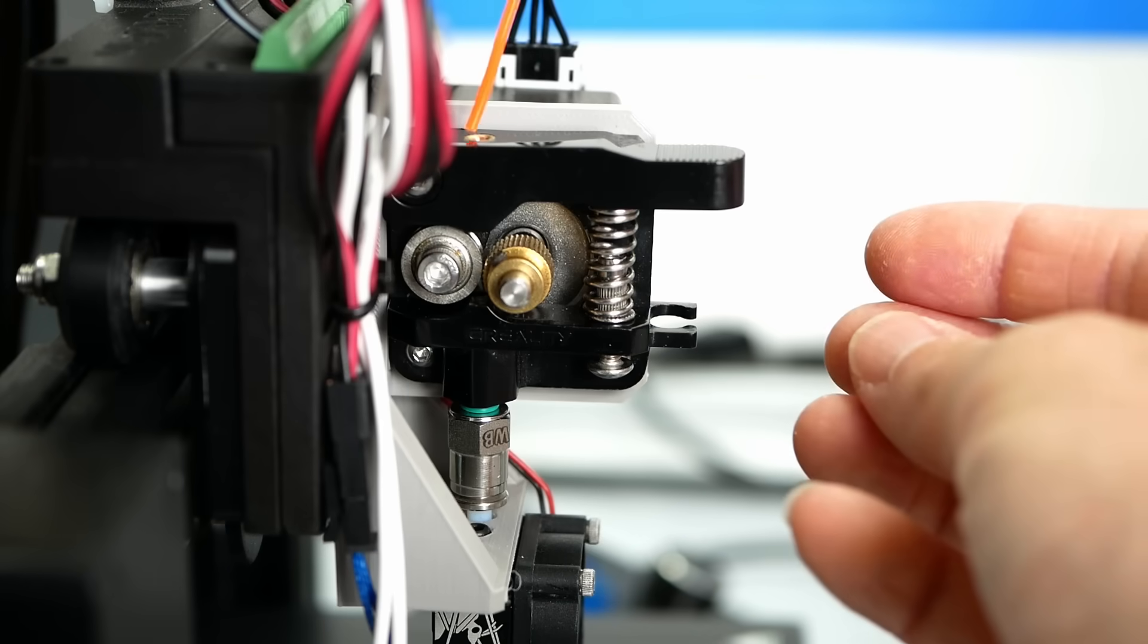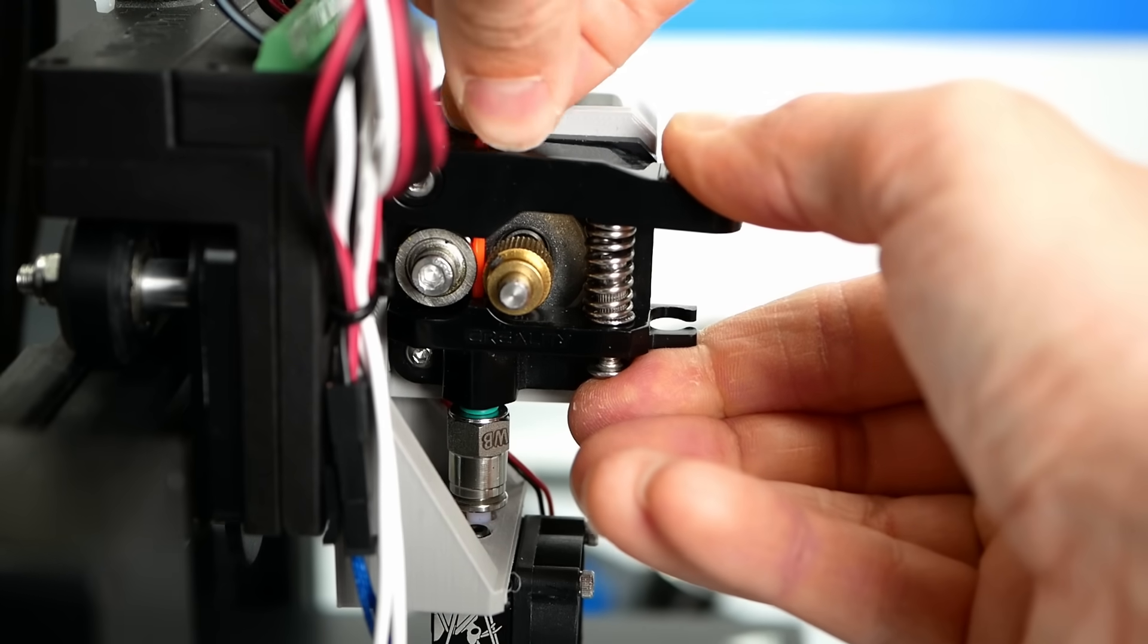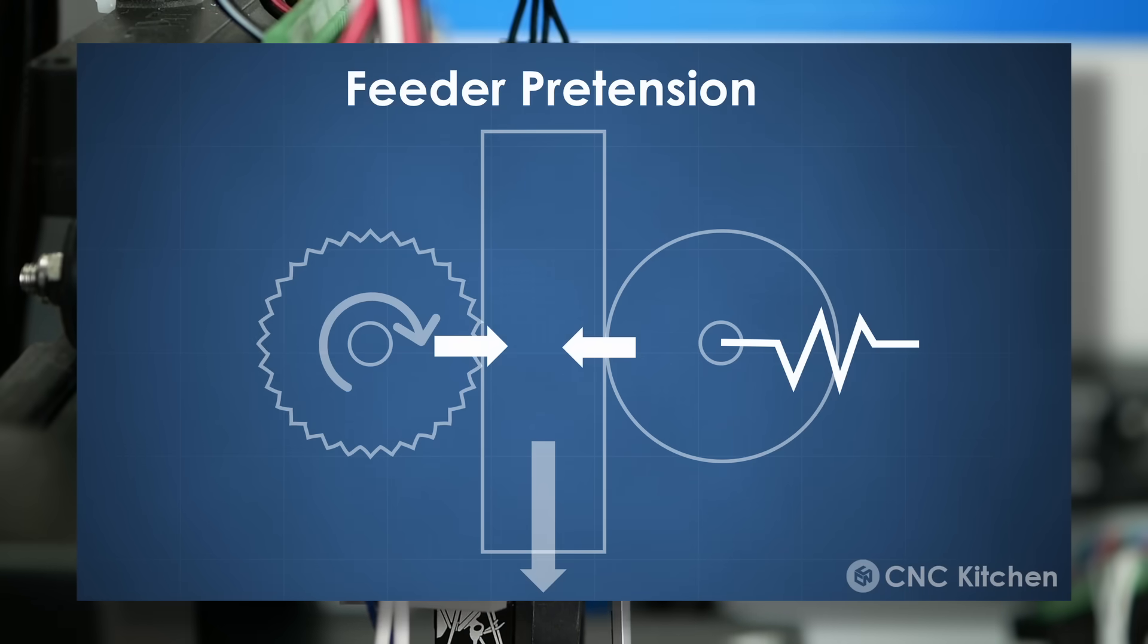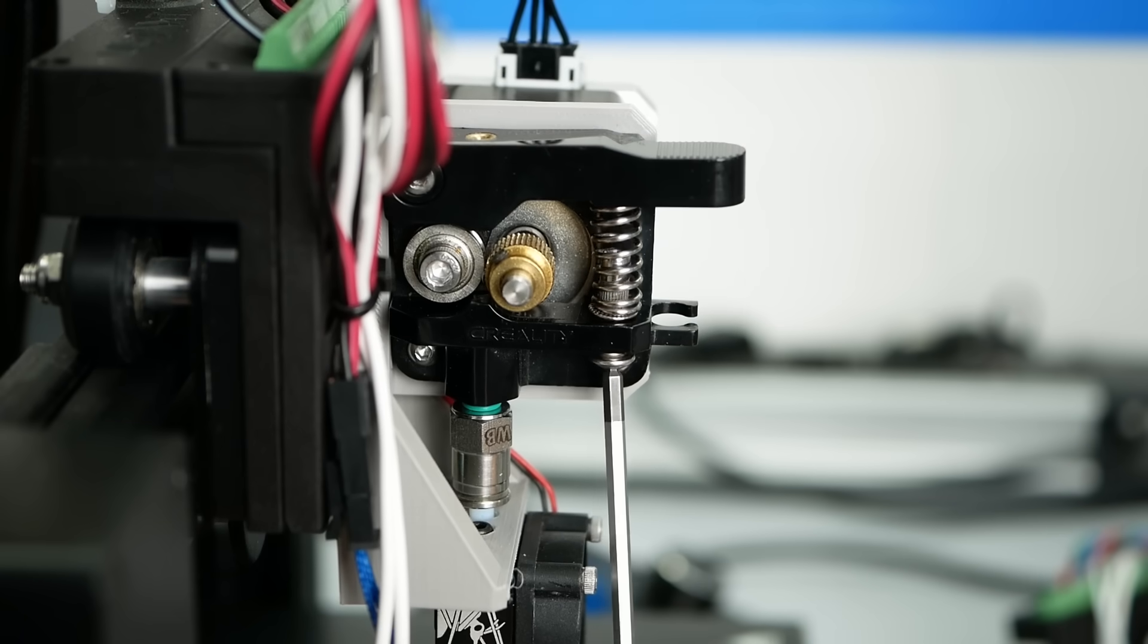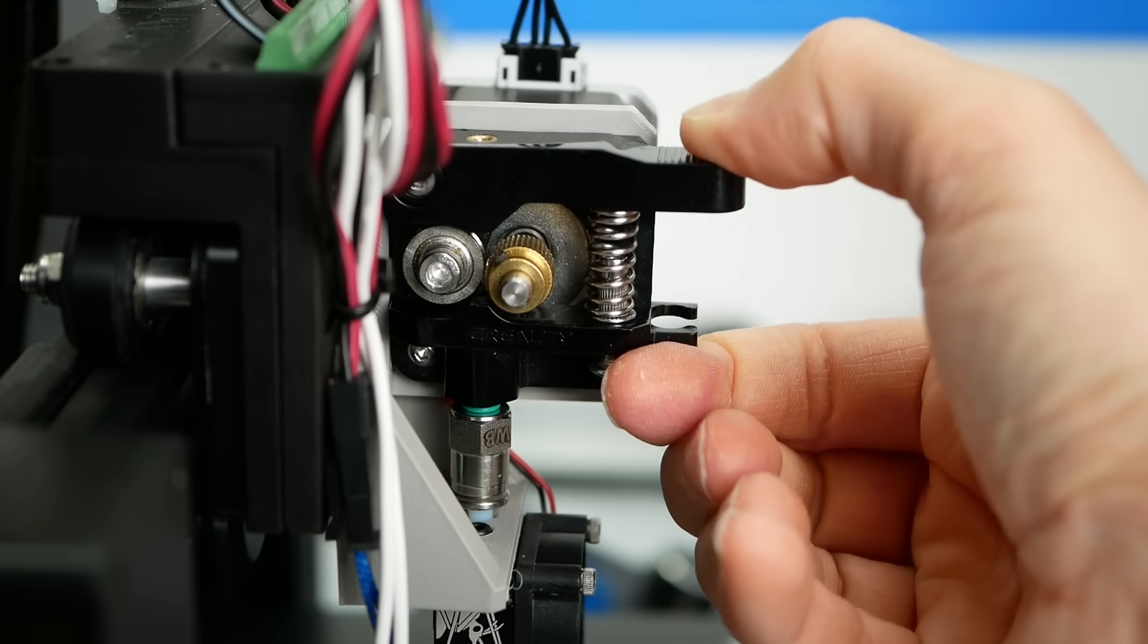In order to transmit force onto the material, the gear needs to get pushed onto the filament so that the teeth grip into it. A spring usually generates that force that you can set to a specific pre-tension via a screw. But how much force do you need that an extrusion system properly works?